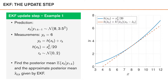We want to find both the true posterior mean and the approximate posterior mean given by the EKF, denoted x-hat k given k. Looking at the figure to the right, we have the original non-linear model in blue and the linearized model around the predicted mean in red, where the predicted mean is 8. We have some initial uncertainty in x described by a Gaussian predicted density with mean 8 and standard deviation 3.5.